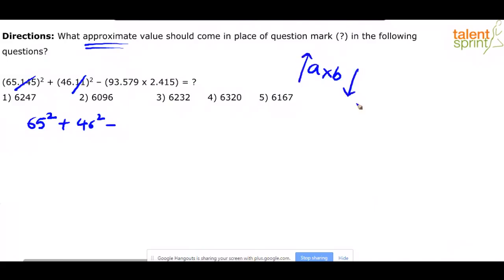If you have increased A, decrease B. If you have decreased A, increase B. So let's follow the same here. 93.579 into 2.415, let us take it as approximately 93.5 into 2.5. It's like I'm decreasing the first value, although negligible decrement there, but decreasing the first one, increasing the second one.